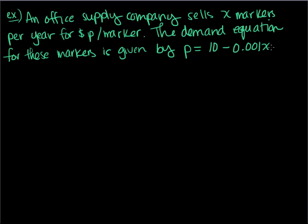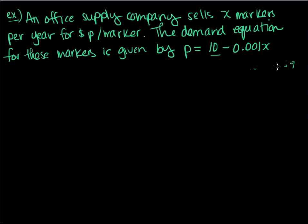Notice that if I want to sell more markers, this price number gets smaller. If I want to sell 1,000 markers, I'd charge 10 minus 0.001 times 1,000, which is $9 per marker. This is a linear demand equation with a negative slope. Your book's example three shows how to find a demand equation assuming it's linear.